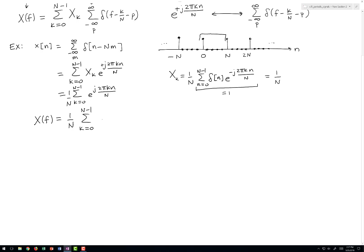And the Fourier transform of the complex exponential, remember, that's up here, that is an infinite sum on index p, delta f minus k over N minus p.